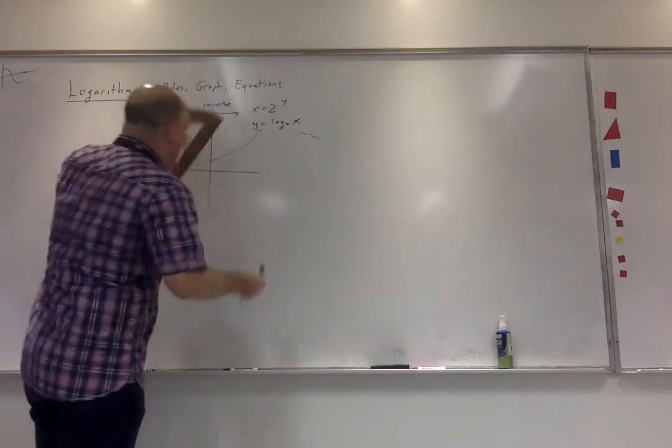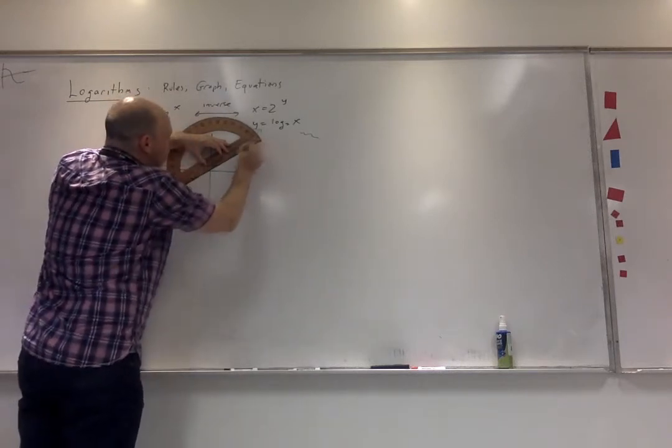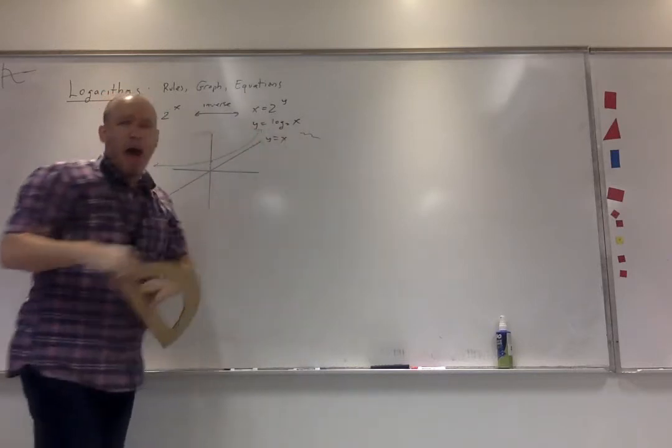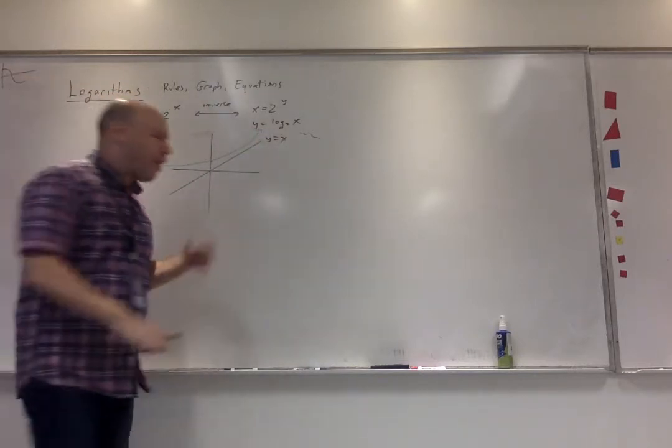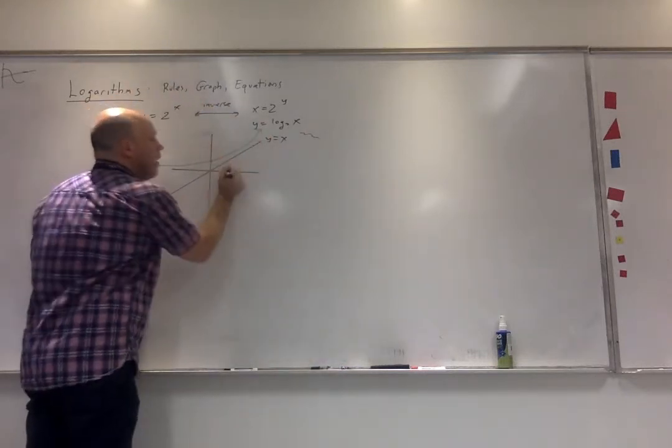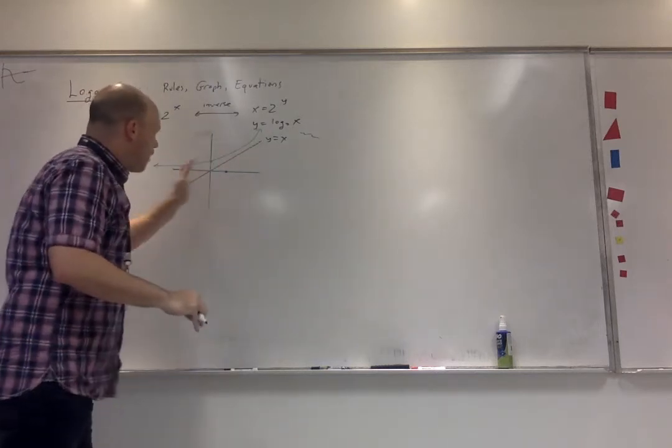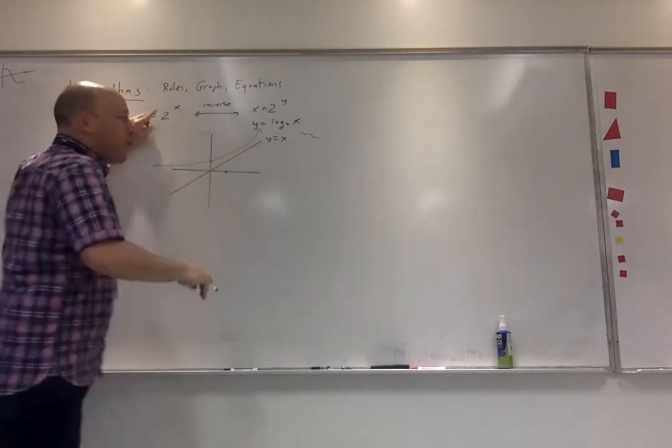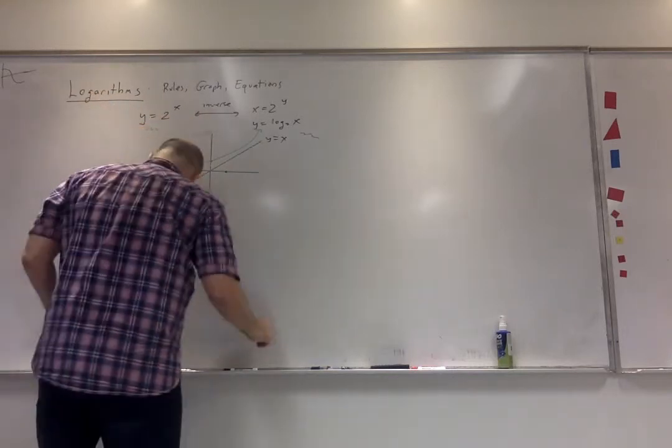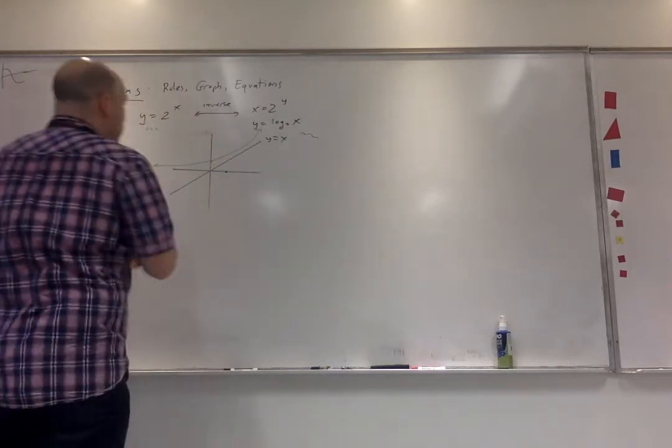You learn how the transformations, so obviously this is a horrible graph. This is the line y equals x, and we're going to reflect the points over the line y equals x to get the inverse function. So if this is 0, 1, this is 1, 0. If the asymptote for y equals 2 to the x is y equals 0, then the asymptote for the inverse is x equals 0.